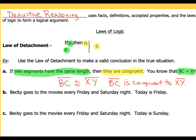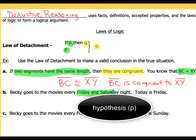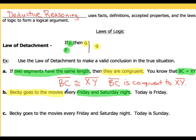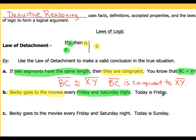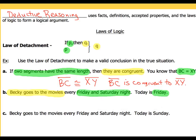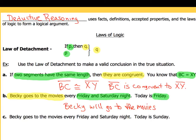If it's Friday or Saturday night, then Becky's going to go to the movies. Thinking about it from that perspective, Friday and Saturday night is going to be our hypothesis, and Becky going to the movies is going to be the conclusion. Looking at the second statement — we're told today is Friday. Since it's Friday, that's part of our hypothesis, because Friday is one of the words highlighted. So we can make the conclusion: Becky will go to the movies.